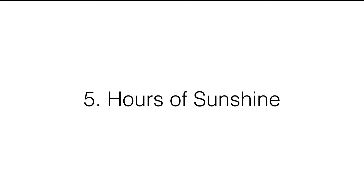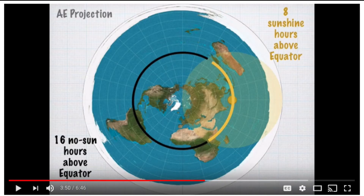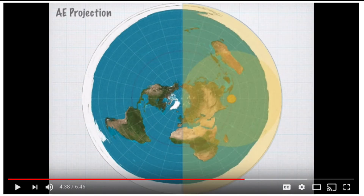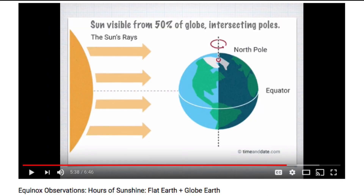Number five: hours of sunshine. Many flat earth proponents say the sun is a spotlight casting light down on the earth. If you analyze this spotlight model, you may find a problem with the number of hours of sunshine on the equinox, requiring modifications to the illumination pattern. Whereas in the globe earth model, the terminator line runs north-south, so every point on the globe receives approximately 12 hours of sunshine during the equinox.